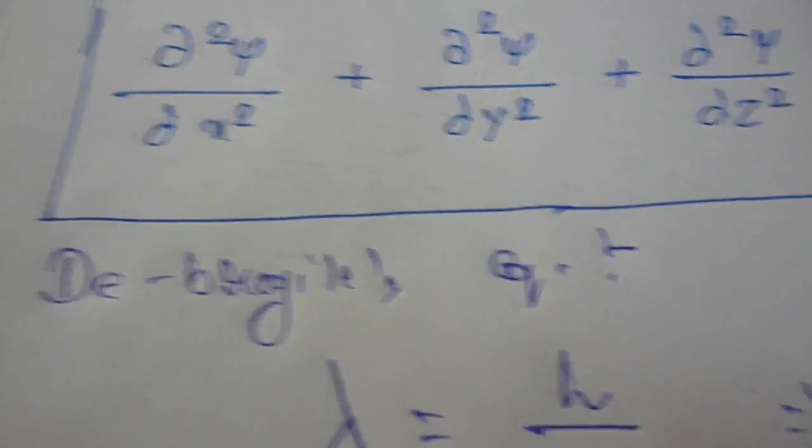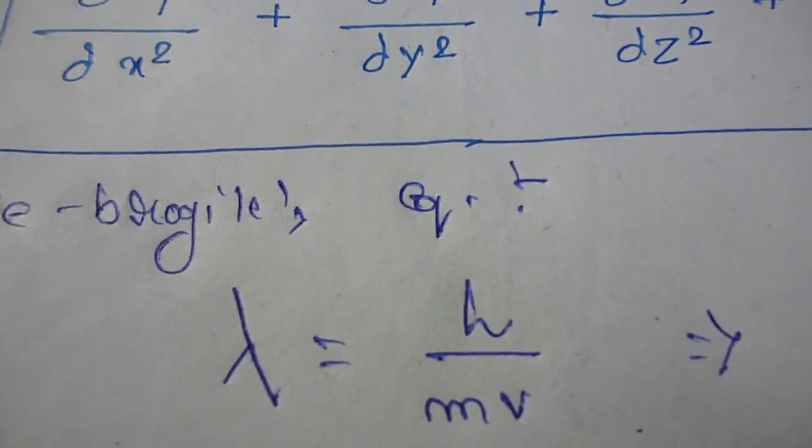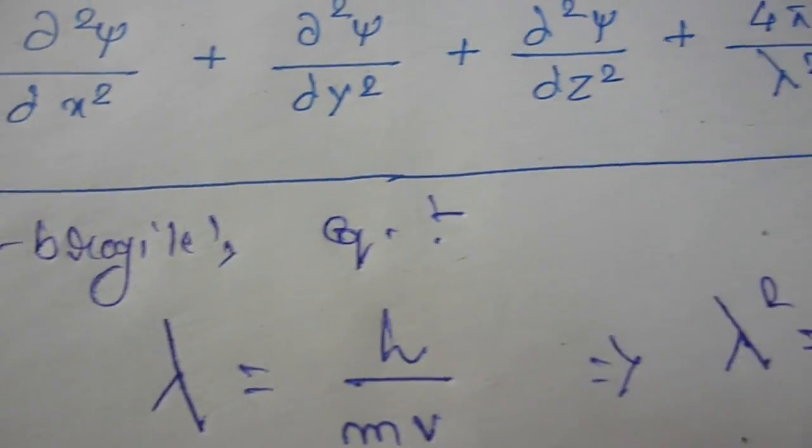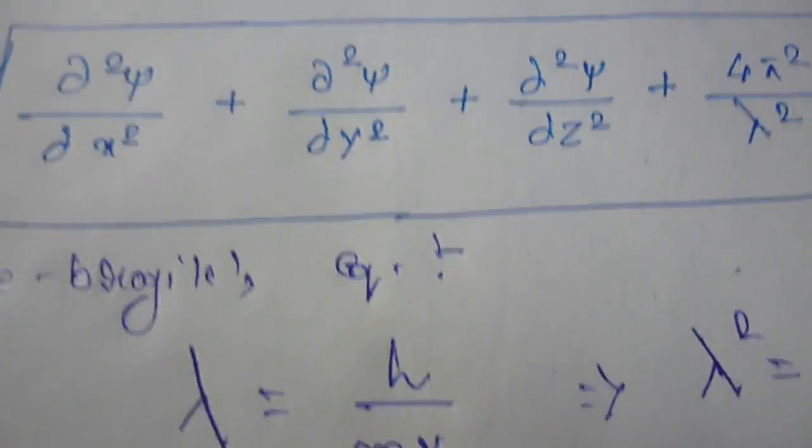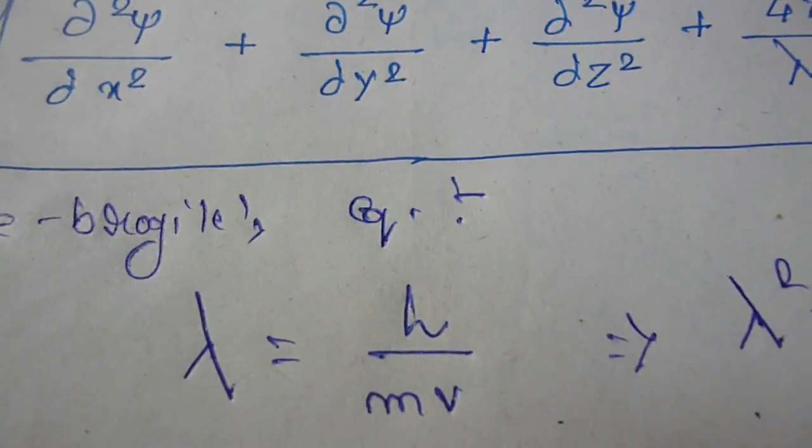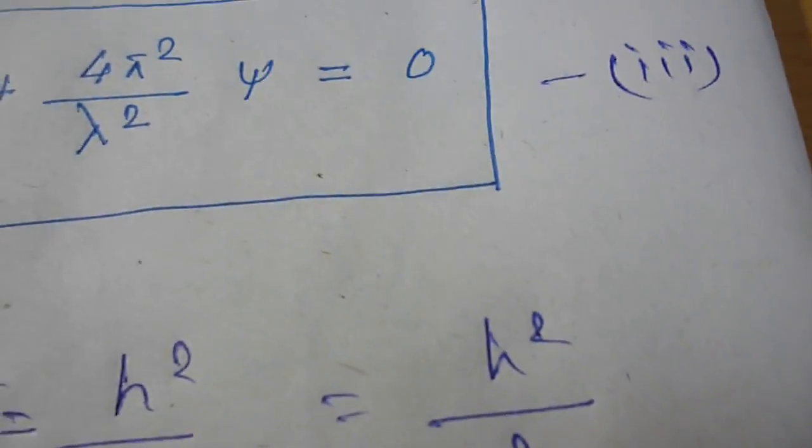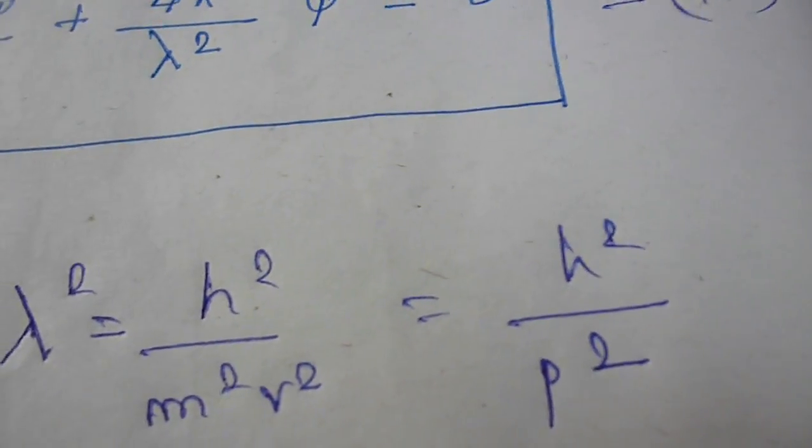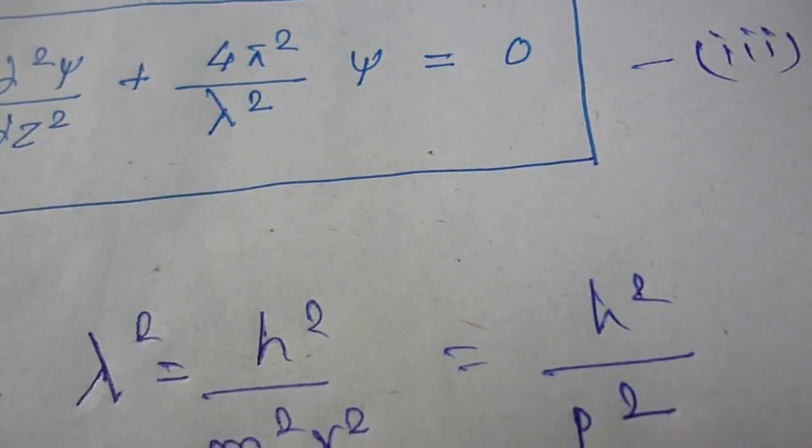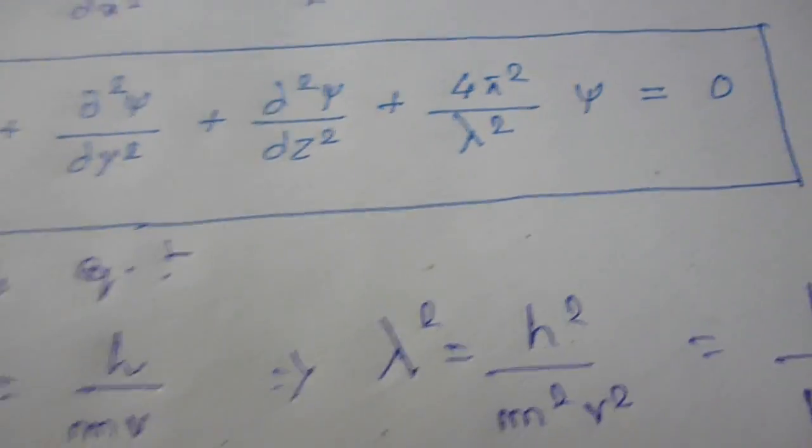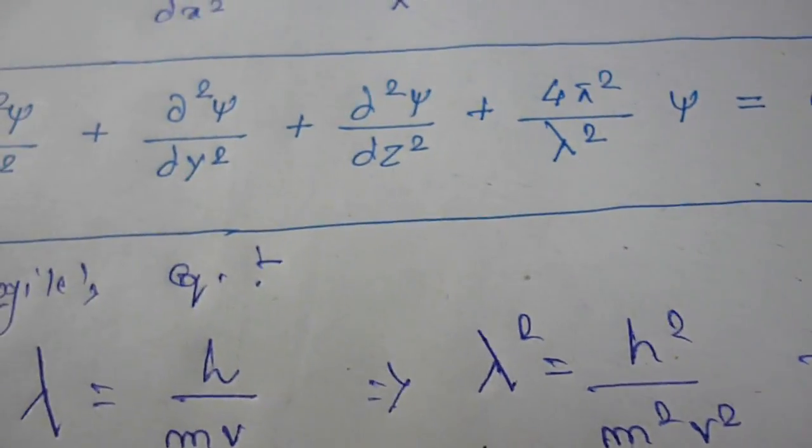From de Broglie's equation we all know that lambda is h/mv where m is the mass of the object, v is its velocity. If I square it you get h²/m²v² which is nothing but h²/p². Now using this particular part we can move to the next part of our equation.